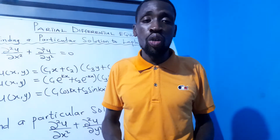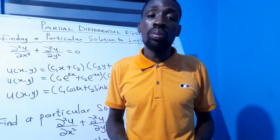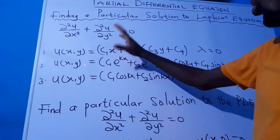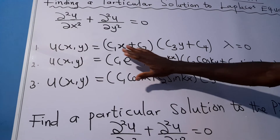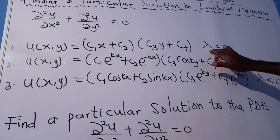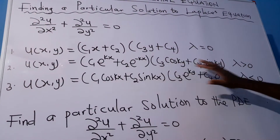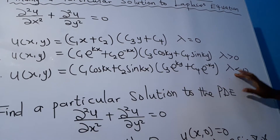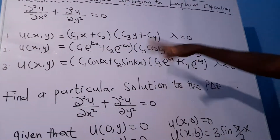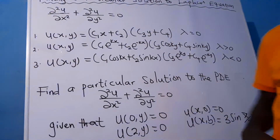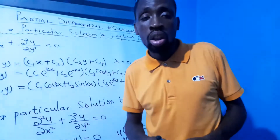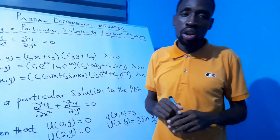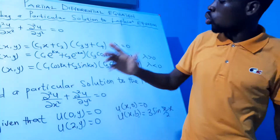If you have not watched my videos on that, please check it out on YouTube. Last time we said the general solution to Laplace's equation is one form when lambda equals zero, another when lambda is greater than zero, and another when lambda is less than zero. So there are three general equations, but today we'll find just one particular solution.